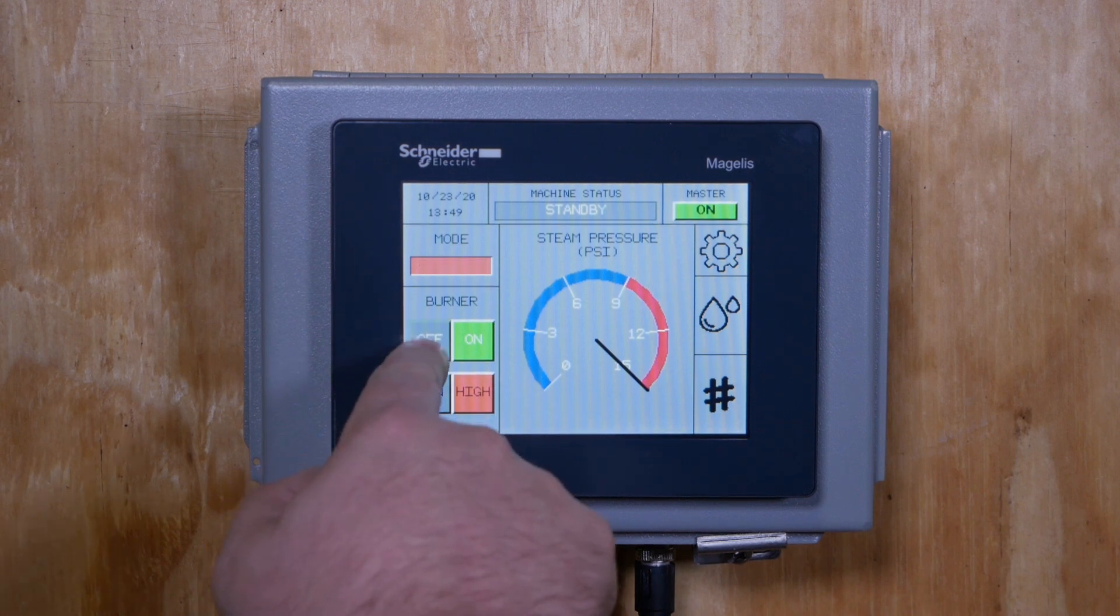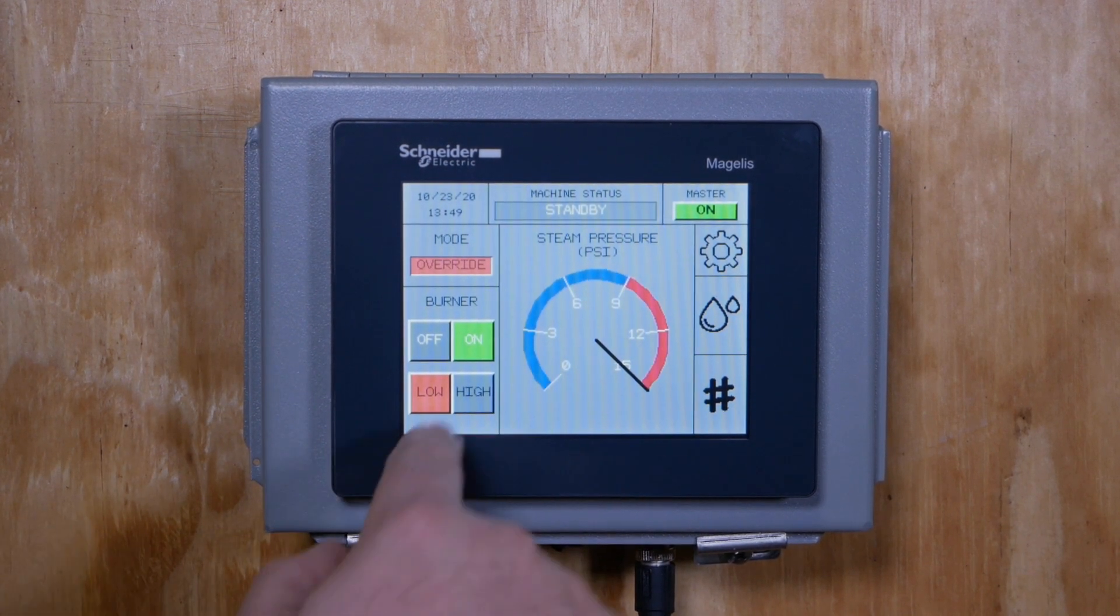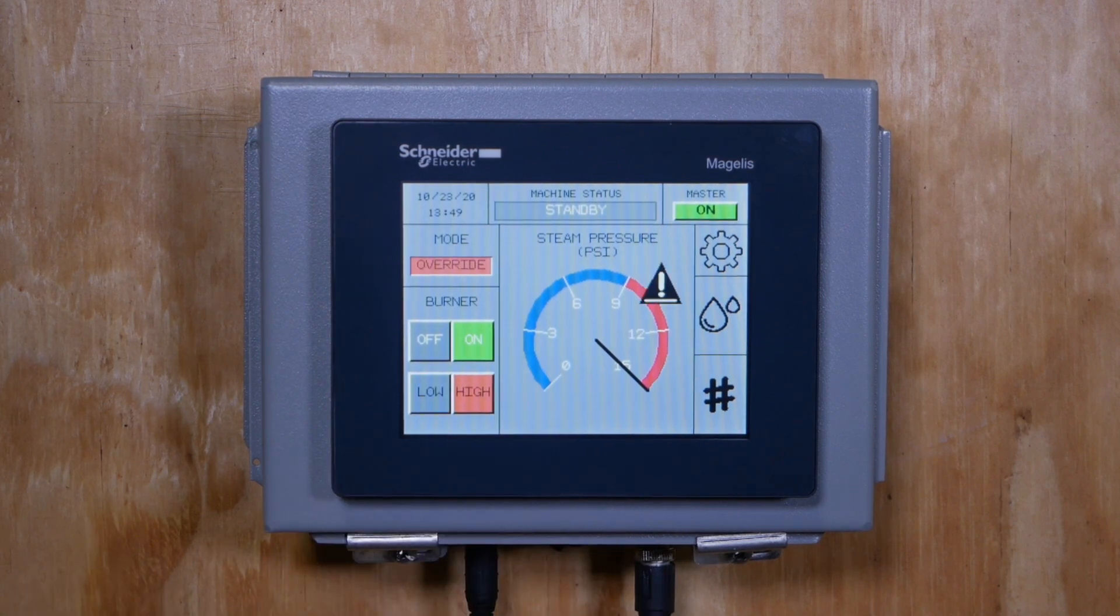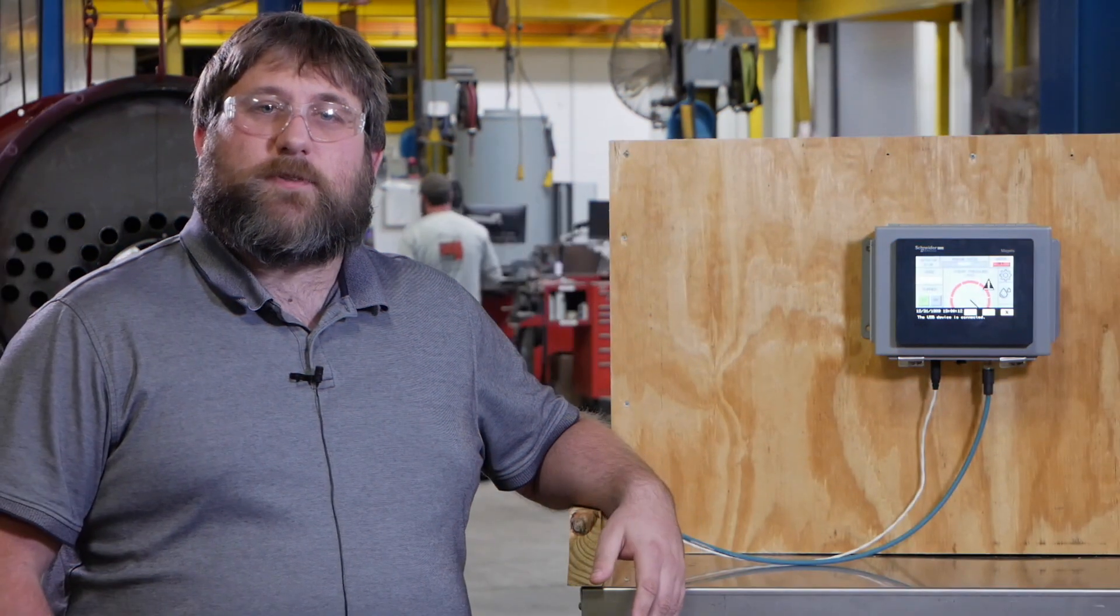Lastly, the burner status displays burner parameters. When you are in override mode, additional controls are unlocked allowing you to turn the burner on and off and change between low and high firing modes. Now that we've covered the home screen, let's dive into the settings menu.